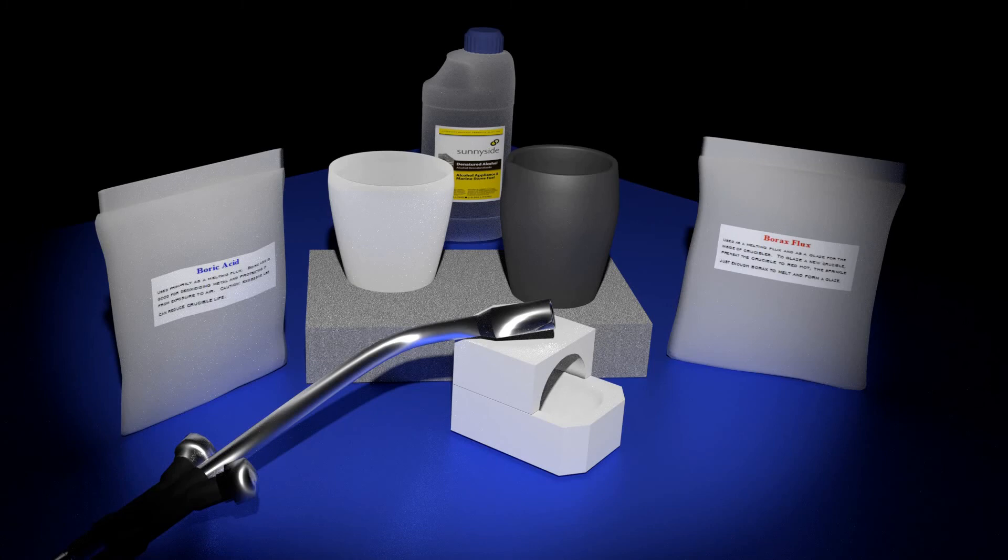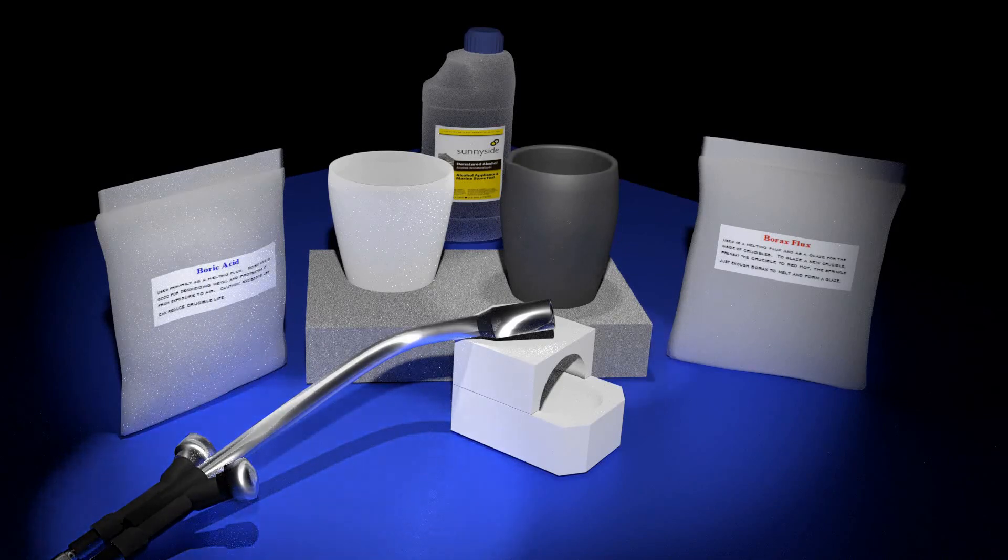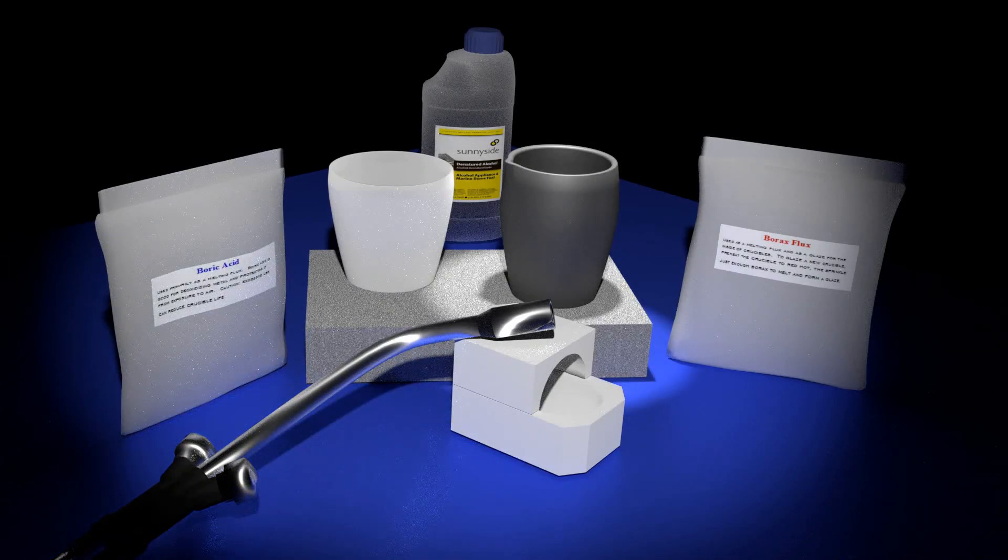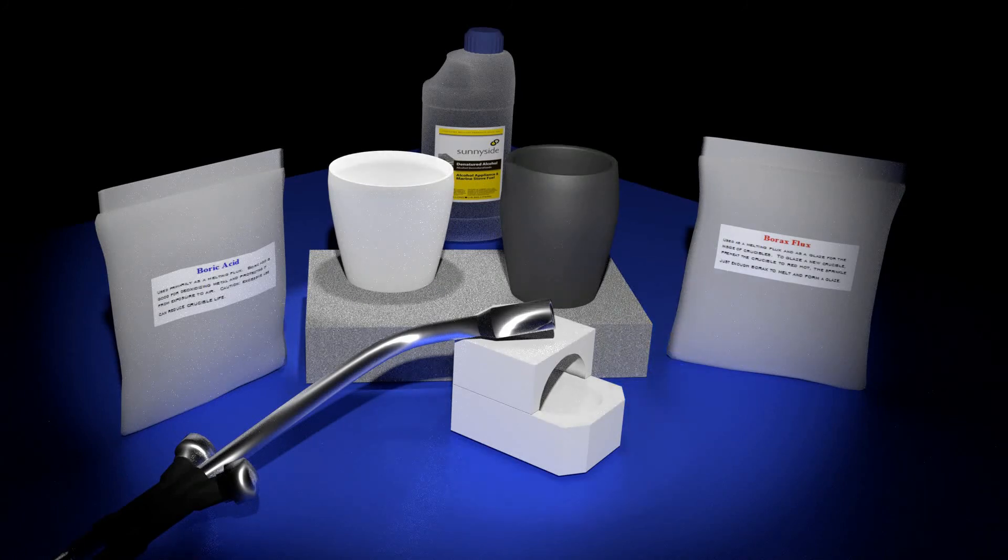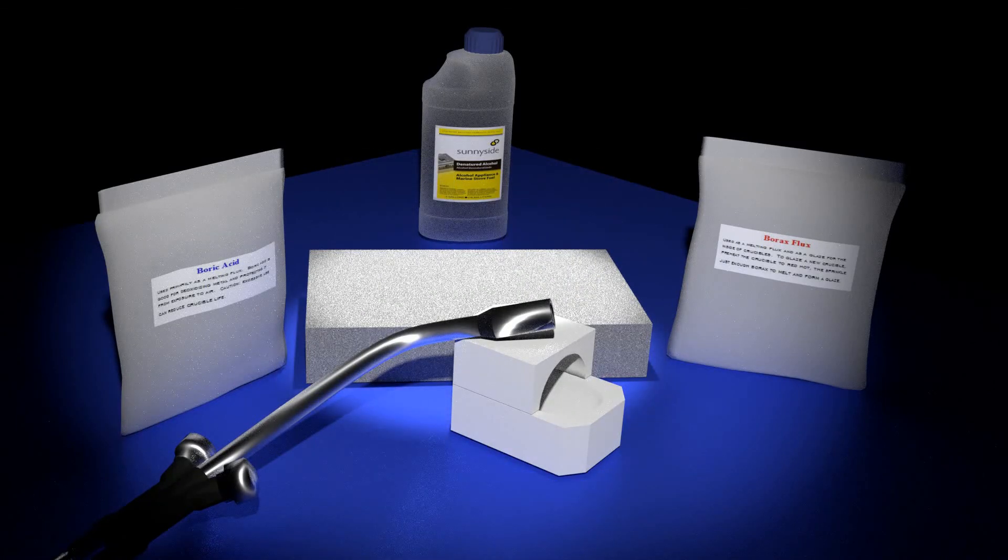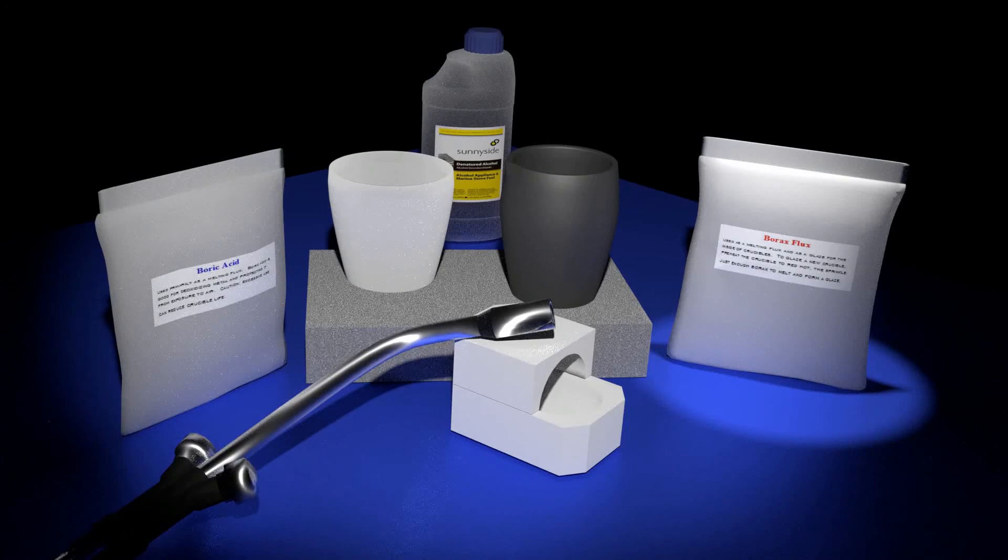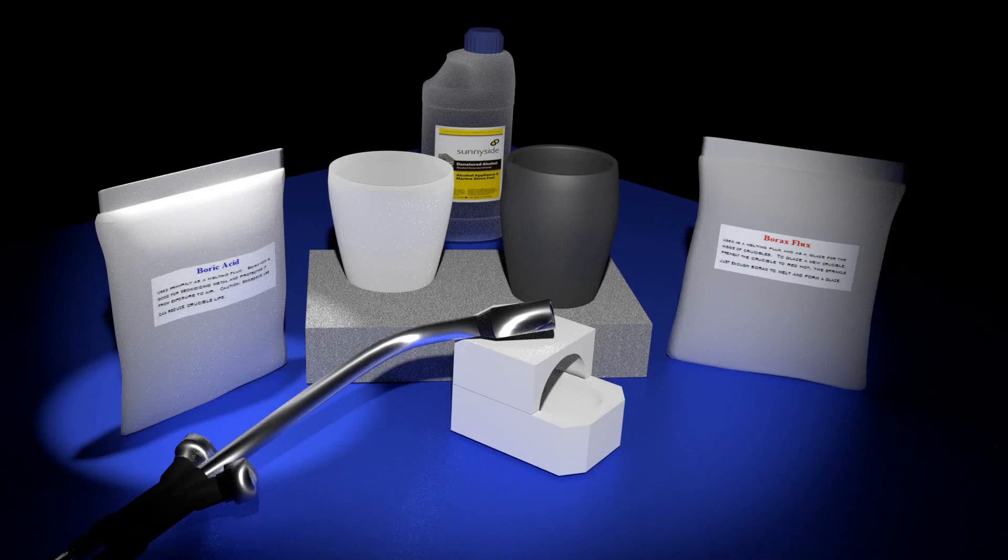Here is what you will need. Melting torch. Use a torch made for this purpose. The common propane torch simply will not provide enough BTUs to do the job. Crucible. You can use a standard clay graphite crucible, a ceramic cup shaped crucible, or you can use a burner ceramic crucible. Crucible rest. Any refractory material, like a brick or a cinder block for example, will do the job. Flux. Common fluxes that are typically used include borax, boric acid, or a combination of the two. Alcohol.